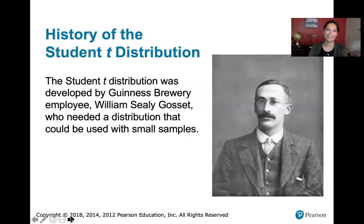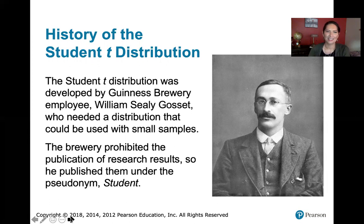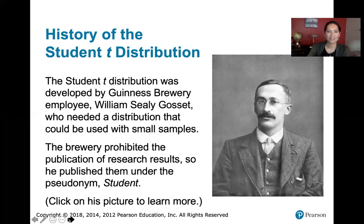Here's a little bit of history. The student t distribution was developed by a Guinness brewery employee, William Seeley Gossett. He needed a distribution that could be used with small samples. The brewery would not allow employees to publish research results, so William got around this by publishing under the pseudonym 'student.' That's why it's called the student t distribution. If you want to learn more about him, you can click on his picture and it will take you to the Wikipedia article about him.